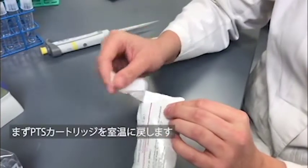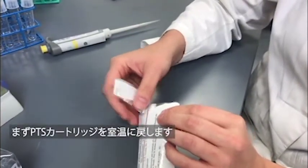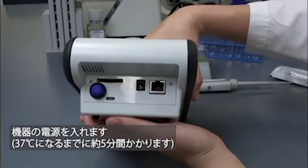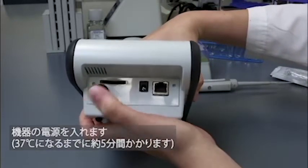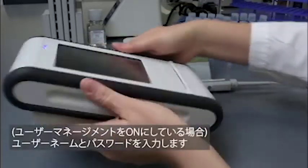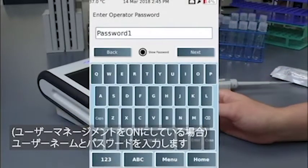Please allow your cartridges to come to room temperature before removing them from the pouch. The system will perform a self-test and will take approximately 5 minutes to reach the appropriate 37 degrees Celsius. If user management is turned on, please enter your username and password.